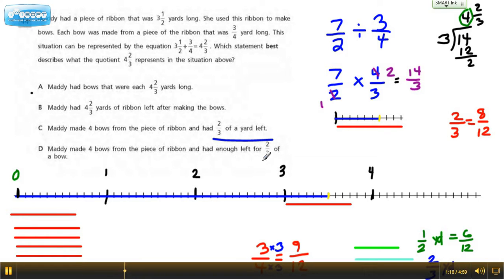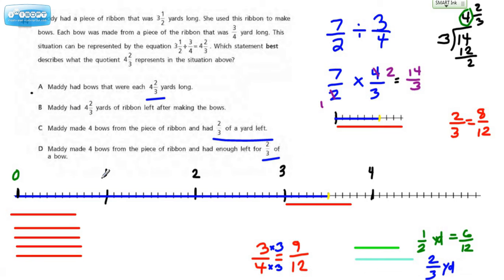This one says ⅔ of a bow. This one talks about 4⅔ yards. So let's really interpret each choice, and then we'll take a look at how we might set this up on our number line to help us understand which answer is correct.